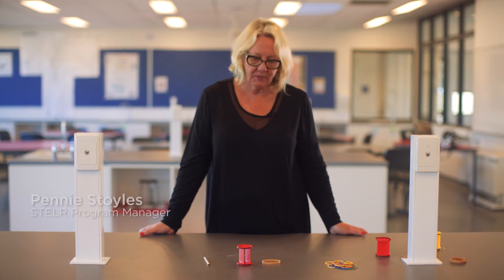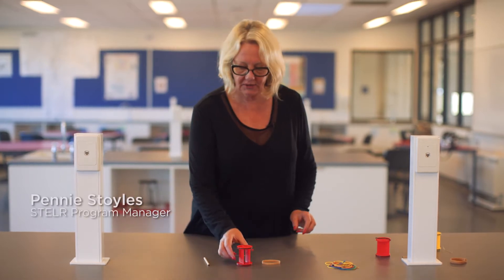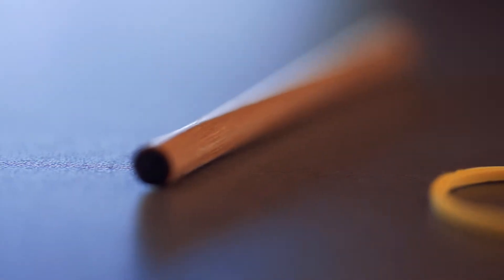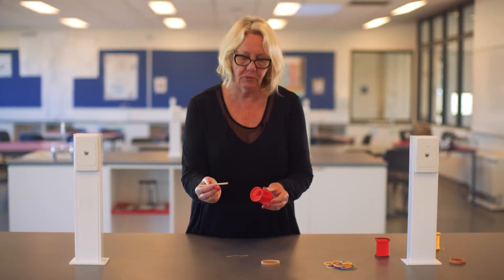This video shows you how to make a cotton reel car. You'll need the Stellar cotton reel car and a piece of dowel that's supplied in the renewable energy kit.